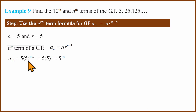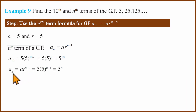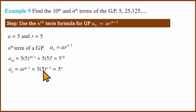We substitute the values of a and r into the formula. The first term a is 5 and r is 5. We find the nth term, which simplifies as follows: 5^(n-1) multiplied by 5 gives us 5^n. For the tenth term, substituting n=10 gives 5^10.